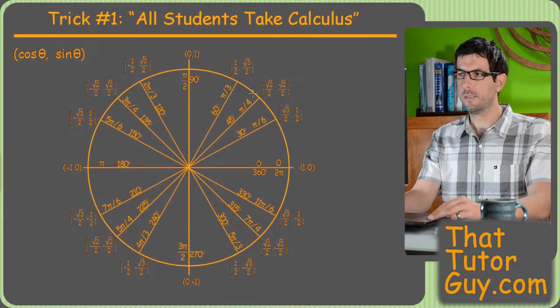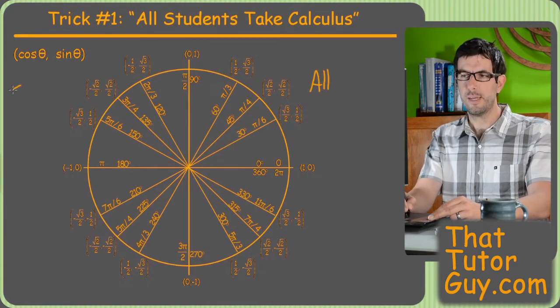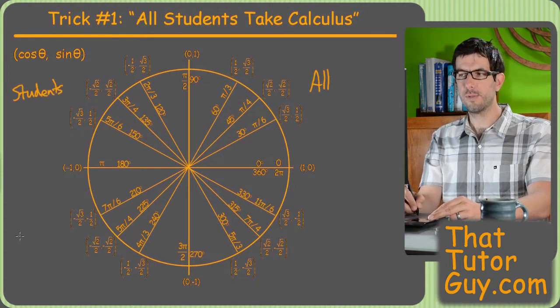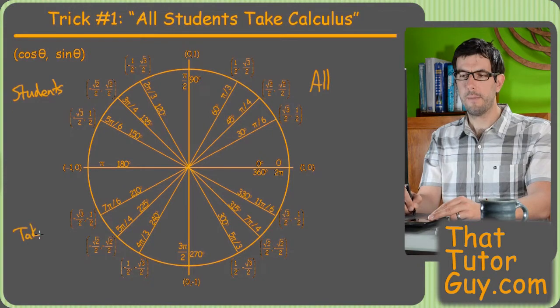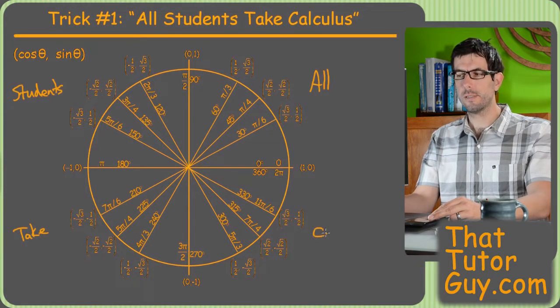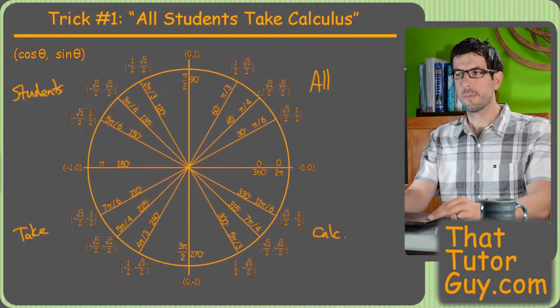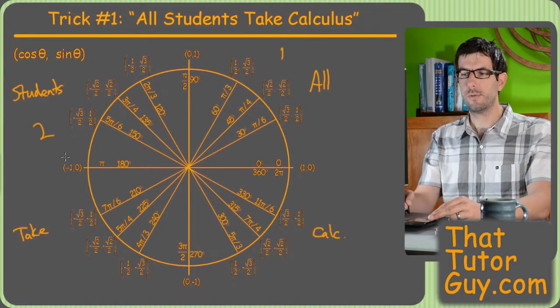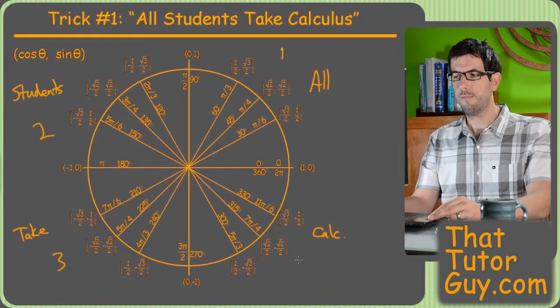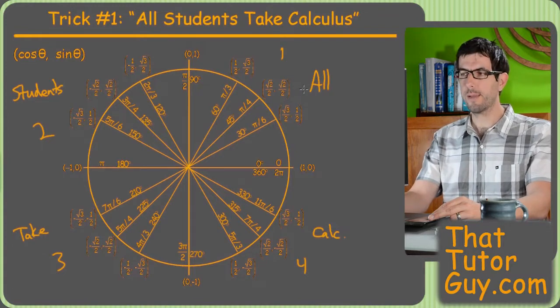So trick number one: all students take calculus. I've been surprised over the years, I actually learned this from a student many years ago, and I've been surprised at how many other students did not know this already. The deal is that in the four quadrants, it's very hard to talk and write, in the four quadrants which are 1, 2, 3, and 4, the sine and cosine might be positive or negative depending which quadrant we're in, right?